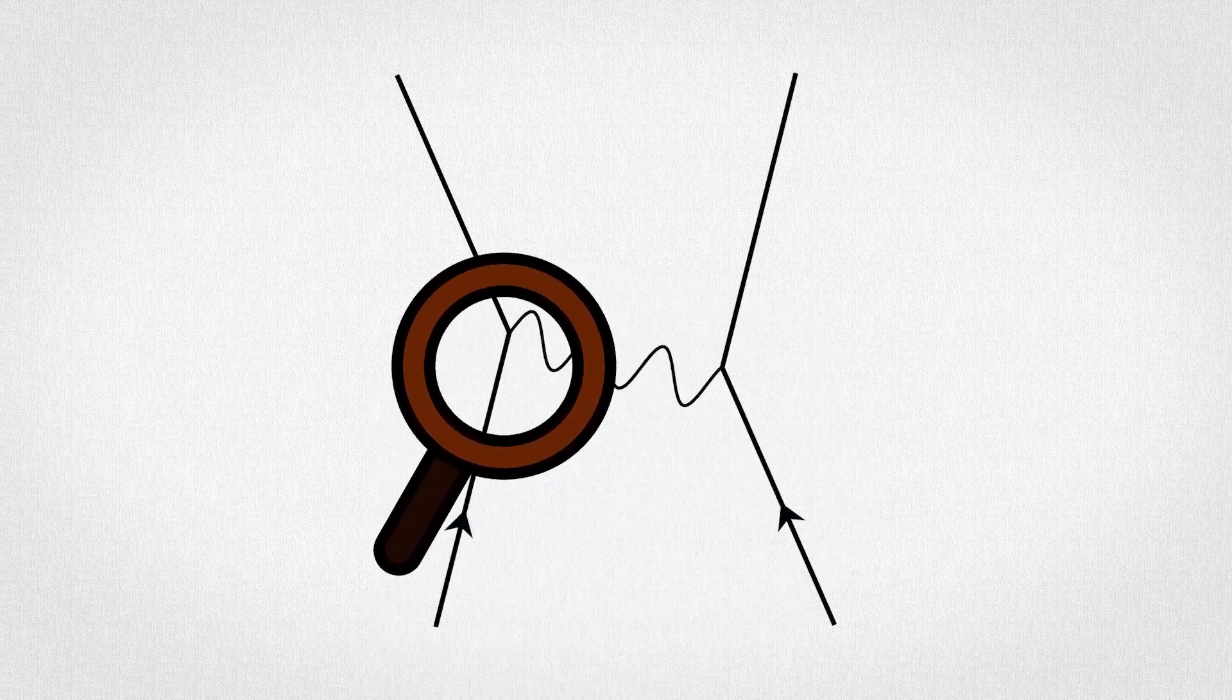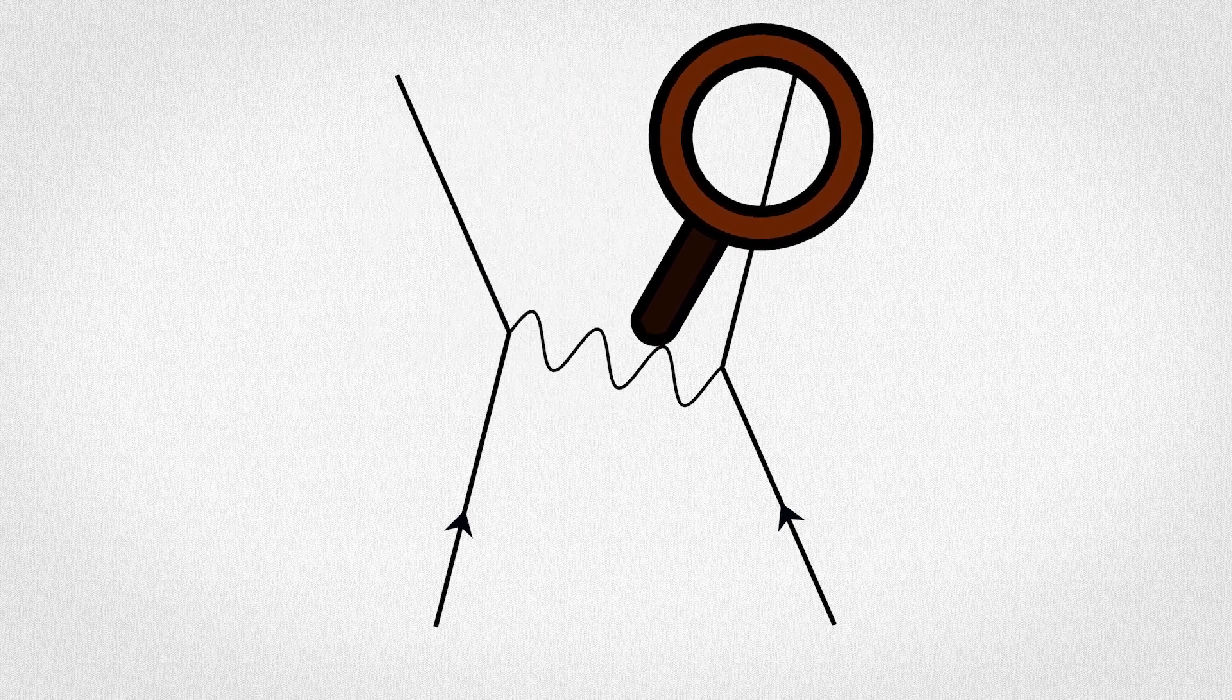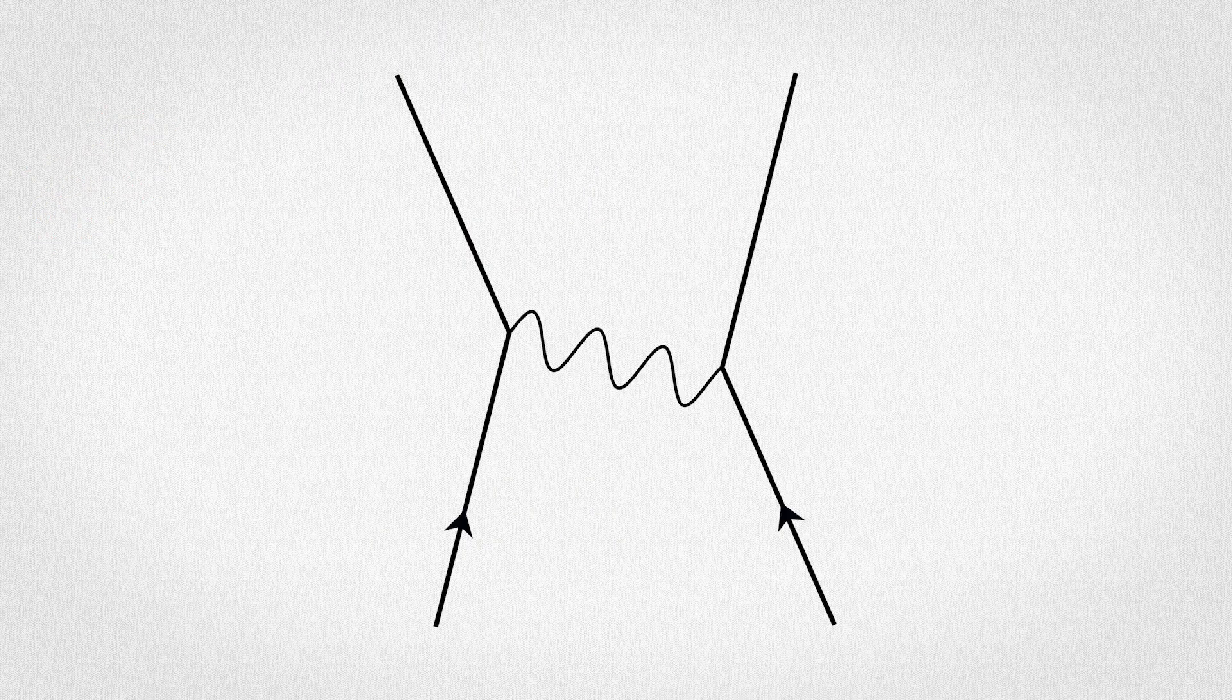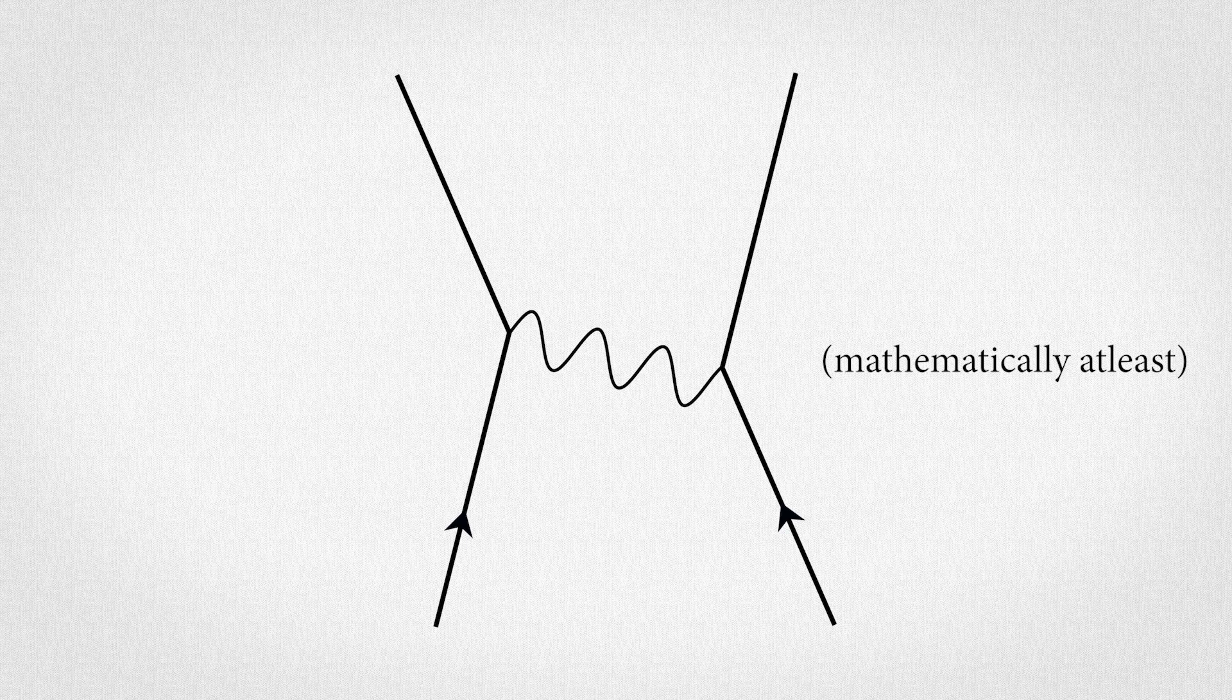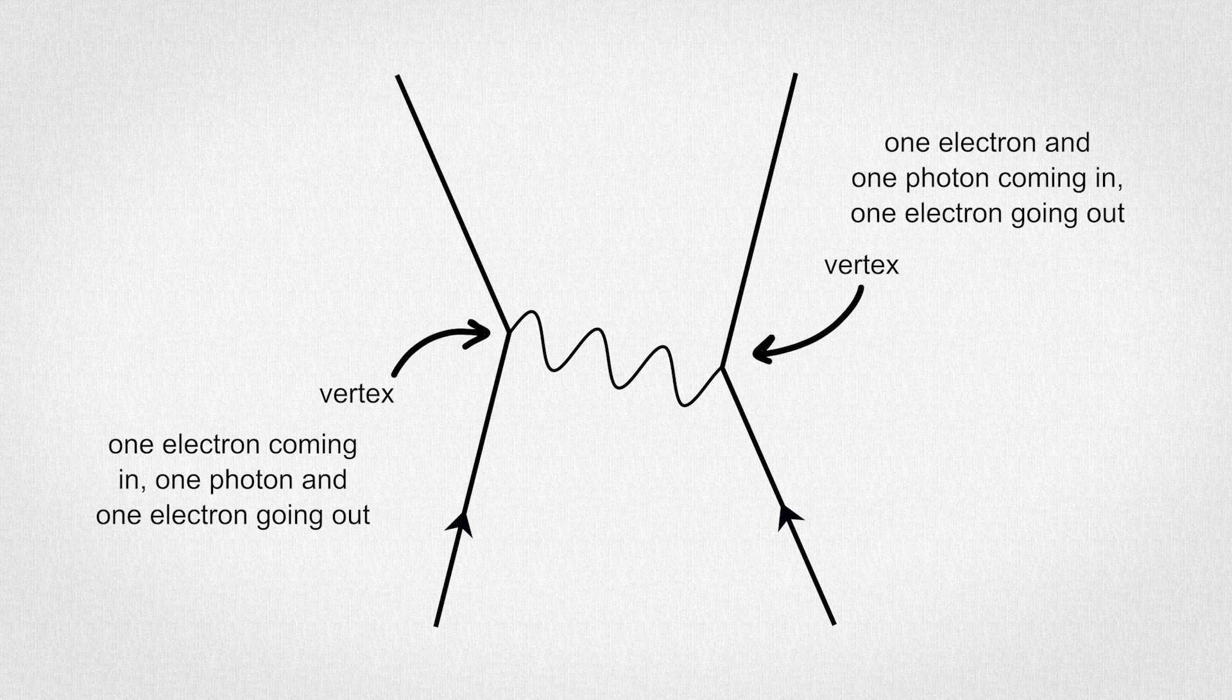This is because the actual lines are not the important part of a Feynman diagram. Sure, they are, for bookkeeping reasons. All that matters, mathematically at least, is how many of what kind of lines go into and come out of each vertex.